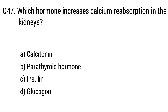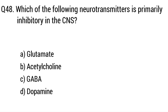Question 47. Which hormone increases calcium reabsorption in the kidney? The right answer is Option B: Parathyroid hormone. Question 48. Which of the following neurotransmitters is primarily inhibitory in the CNS? The right answer is Option C: GABA.